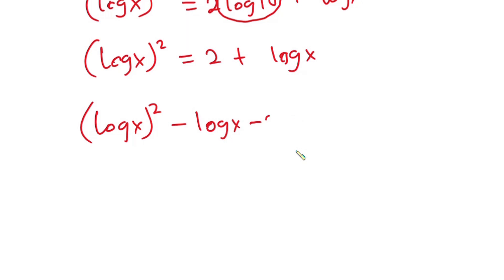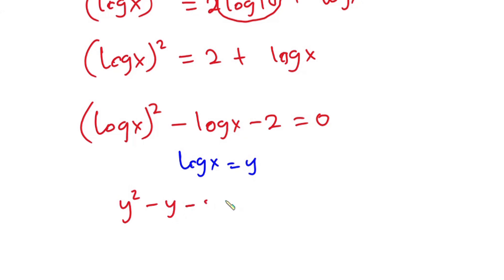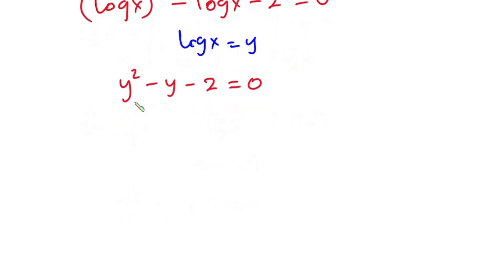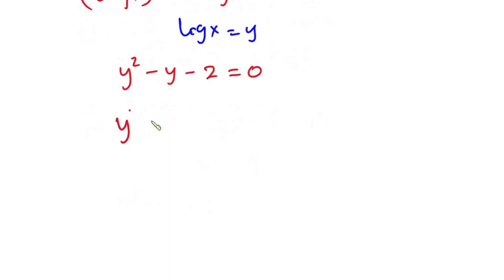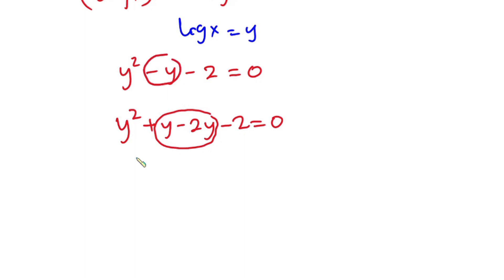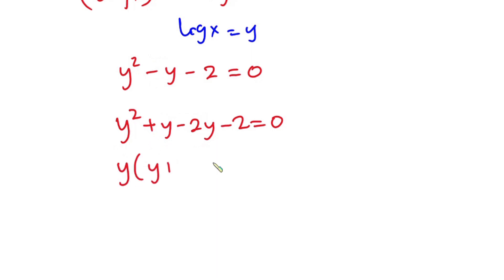From here I'm going to equate everything to zero, so we have log x squared minus log x minus two is equal to zero. Now I'm going to set log x equal to y, so the equation becomes y squared minus y minus two is equal to zero. This is the same as y squared plus y minus two y minus two equals zero.